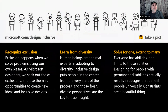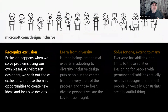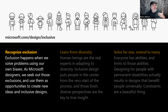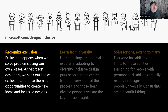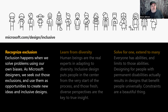These are our principles at Microsoft of inclusive design. First: Recognize Exclusion. Exclusion happens when we solve problems using our own biases. As Microsoft designers, we seek out those exclusions and use them as opportunities to create new ideas and inclusive designs. This one is the hardest in many ways, because 'we solve problems using our own biases' might as well say 'we solve problems using our own experiences' — that's obviously what creates bias. We're shaped by our world. How do you design for someone else? The answer, as we'll get into, is that you have to engage.